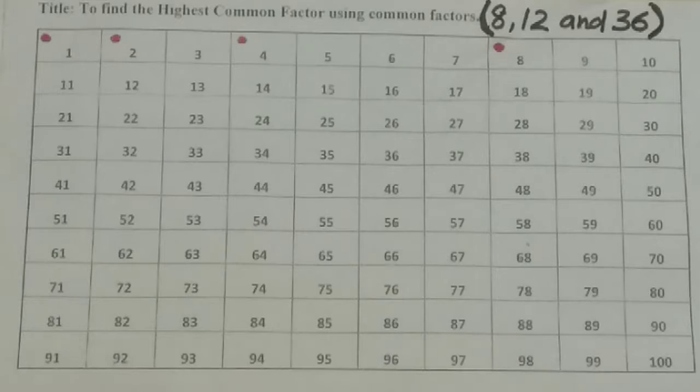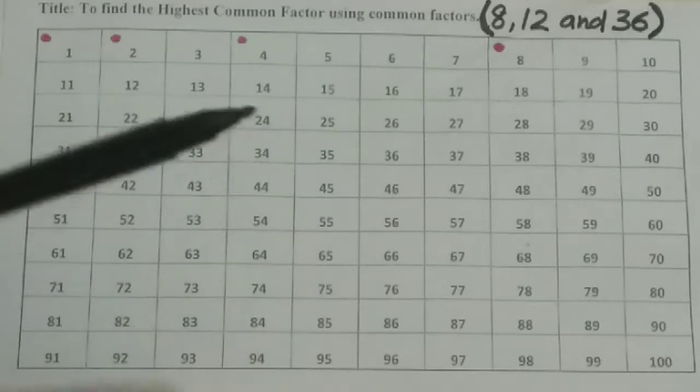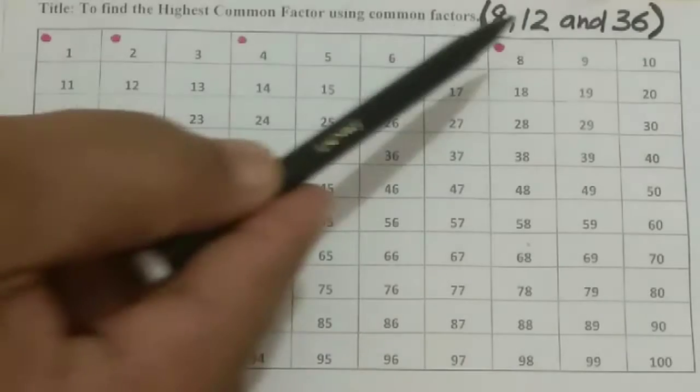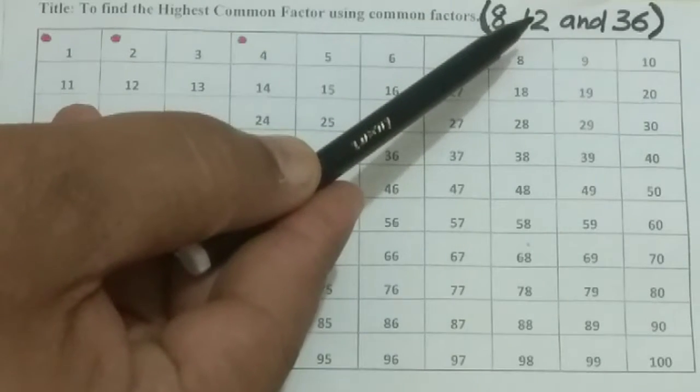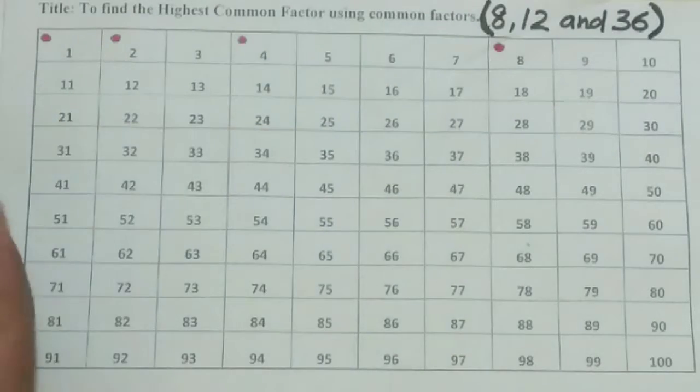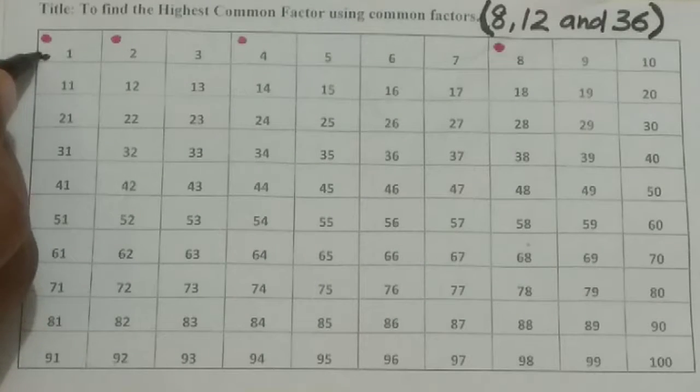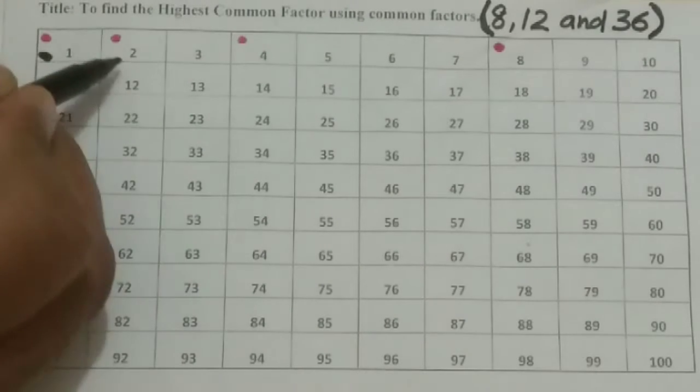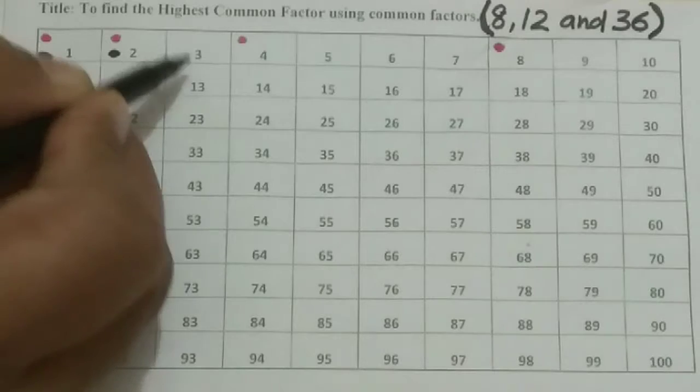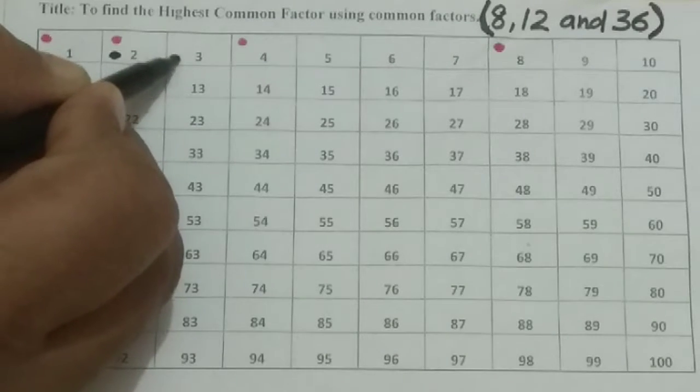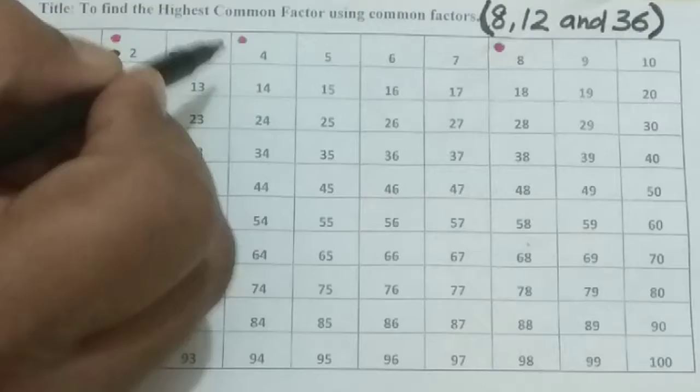Then comes the next one. I am using black sketch pen for 12. So factors of 12: 1 is also a factor, then 2 is also a factor. Now here 3 is a factor, we can divide it by 3 also. Then 4.